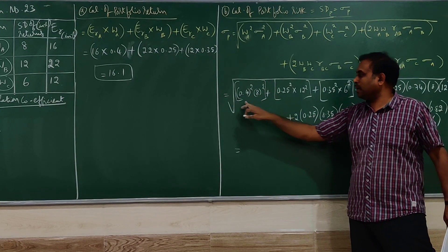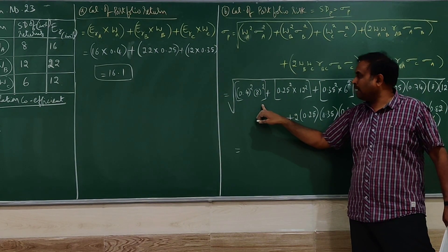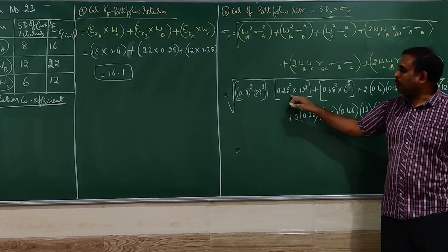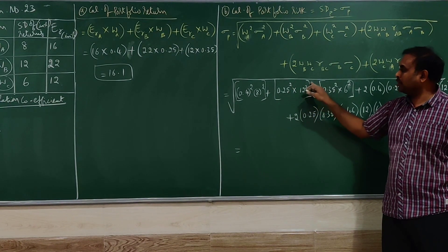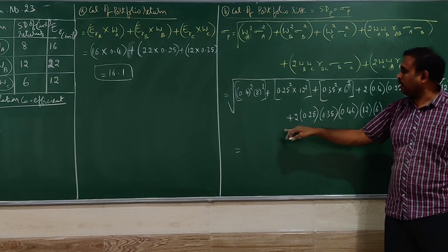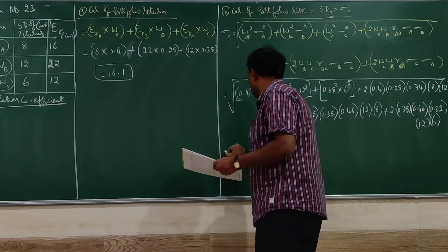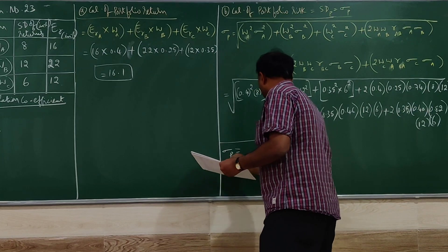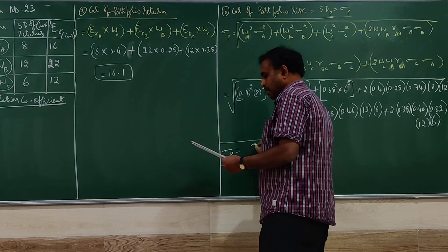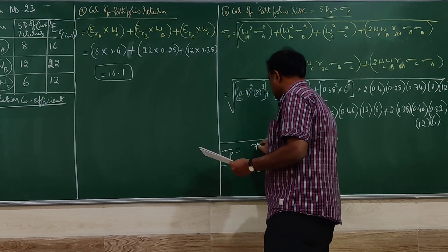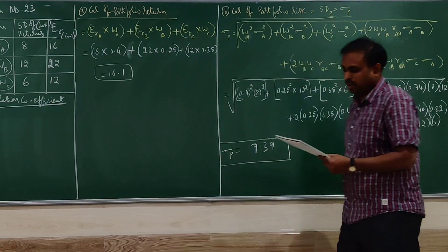You have to go for entire square root, simplify one by one. 0.4 squared multiplied by 8 squared, multiply, 0.25 squared into 12 squared, multiply and take one value. Like that, keep on simplifying. When you keep on simplifying and find out the final answer, the final answer is 7.39.